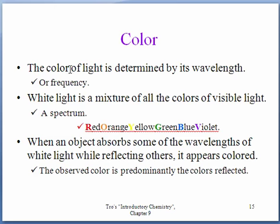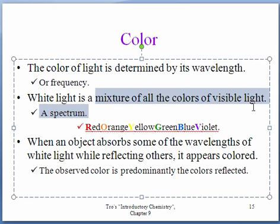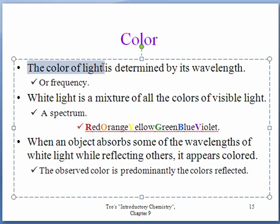White light is a mixture of all the colors of visible light, which are red, orange, yellow, green, blue, and violet. And what makes these colors different is their wavelengths are different or their frequencies are different as well. And if their wavelengths and frequencies are different, their energies are different.